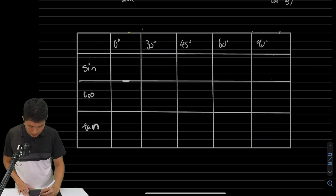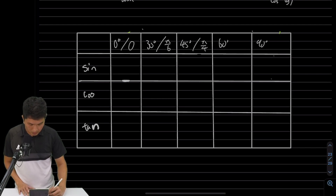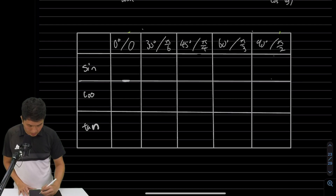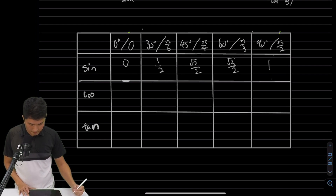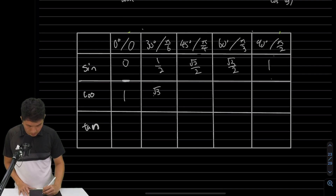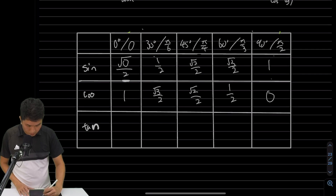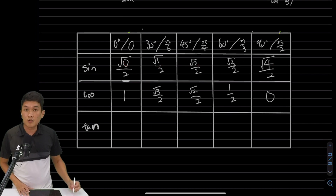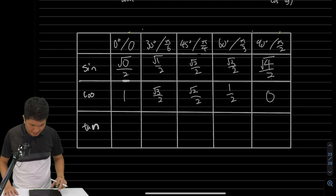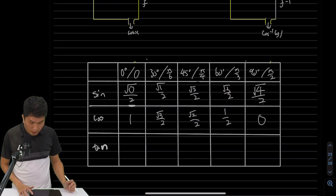Let's do a quick conversion of special ratios to radians: 0° is 0 rad, 30° is π/6, 45° is π/4, 60° is π/3, and 90° is π/2. The sine values are: 0, 1/2, √2/2, √3/2, and 1. An easy way to remember: the numerators are √0, √1, √2, √3, √4 and the denominator is always 2.